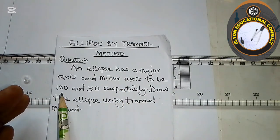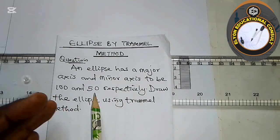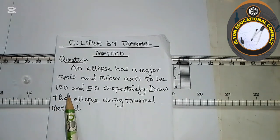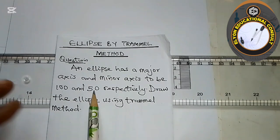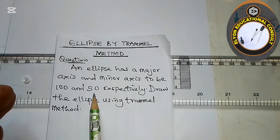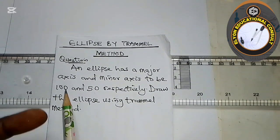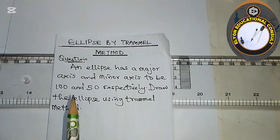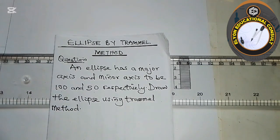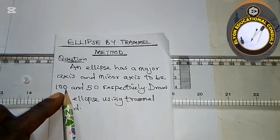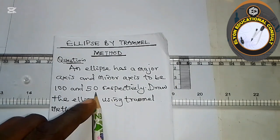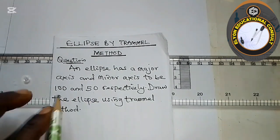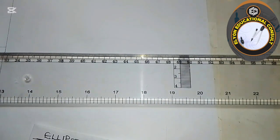If you observe in my previous videos on ellipses, I've been using the major axis as 100 and the minor axis as 50. That doesn't mean these are fixed values — you can have the major axis different from 100 and the minor axis different from 50. Just get the procedure right. An ellipse has two axes: the major axis and the minor axis, like two diameters — the longer part is the major and the shorter part is the minor.